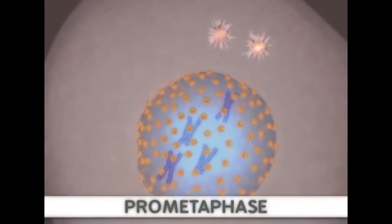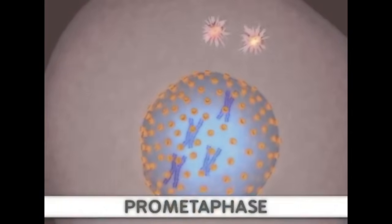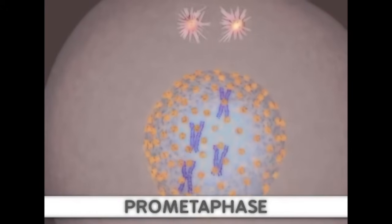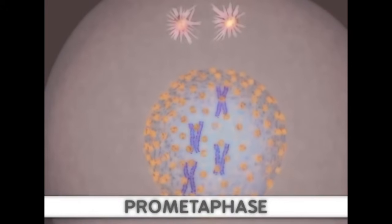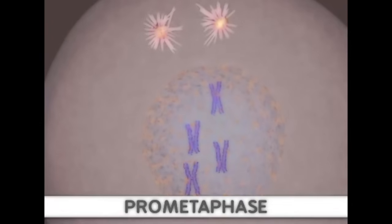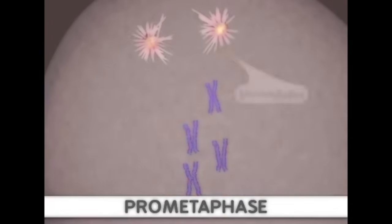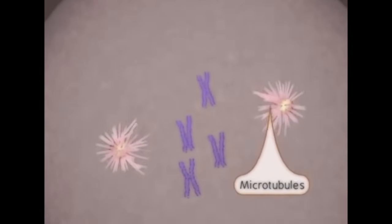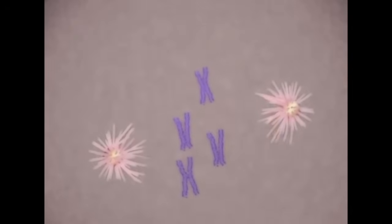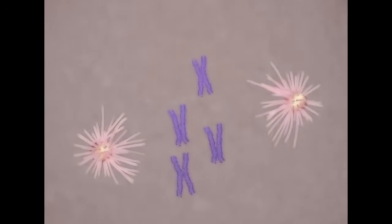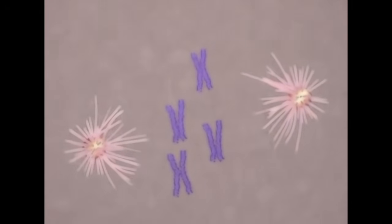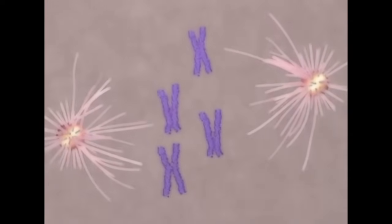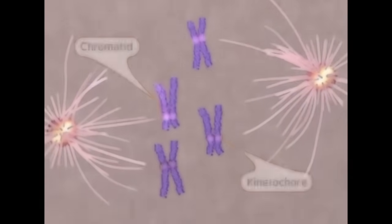Next, prometaphase begins when the nuclear membrane is broken down. At the same time, microtubule strands, or spindle fibers, are growing from the centrosomes. These strands attach to a protein structure called the kinetochore. One kinetochore is attached to the centromere of each sister chromatid.